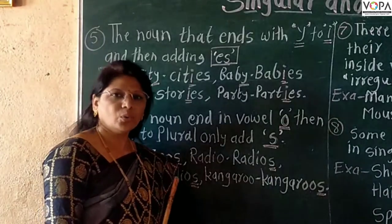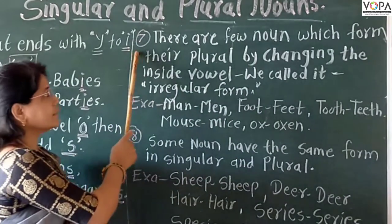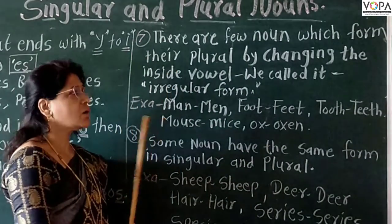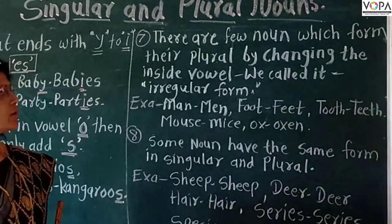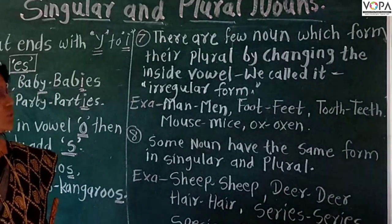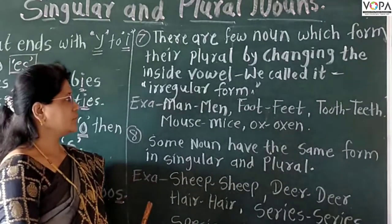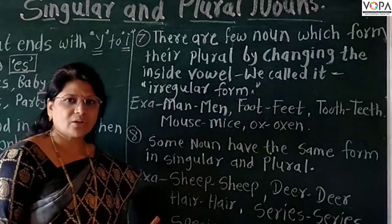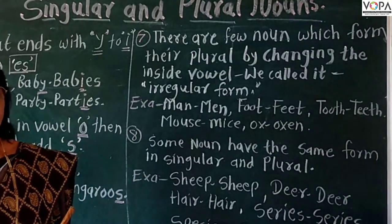Now see rule number 7. There are a few nouns which form their plural by changing the inside vowel. We call it an irregular form.